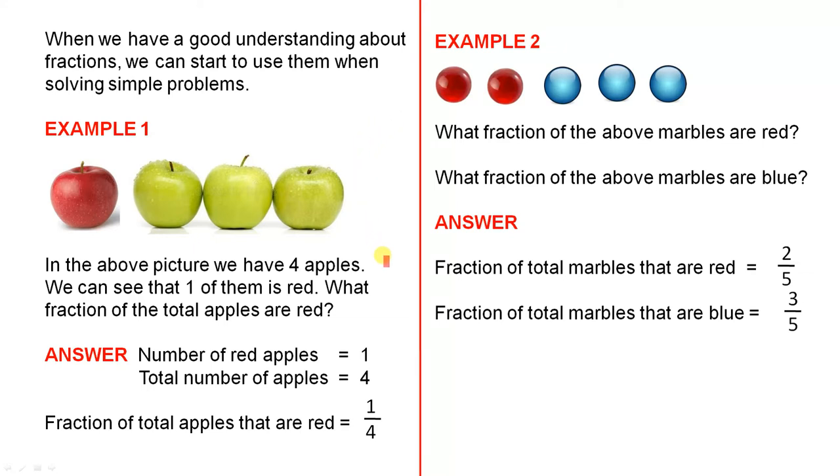Example 1. In the above picture we have 4 apples. We can see that one of them is red. What fraction of the total apples are red? The answer: the number of red apples equals 1, the total number of apples equals 4, so the fraction of total apples that are red equals 1 over 4.